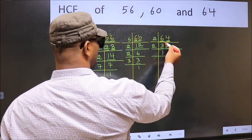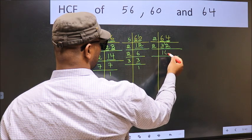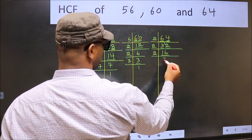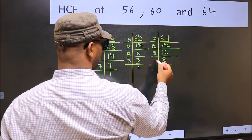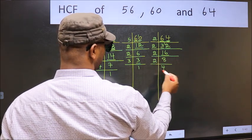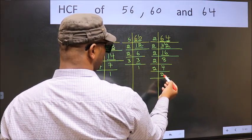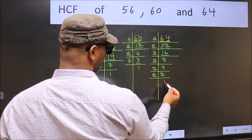3 minus 2 is 1, carried forward 12. When do we get 12 in 2 table? 2 times 6 is 12. Now 16 is 2 times 8 is 16. Now 8 is 2 times 4 is 8. Now 4 is 2 times 2 is 4. Now we have 2, 2 is a prime number, so 2 times 1 is 2.